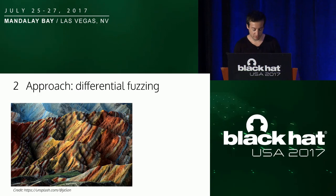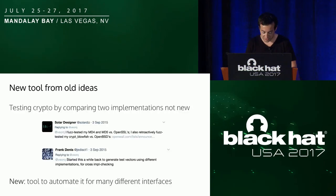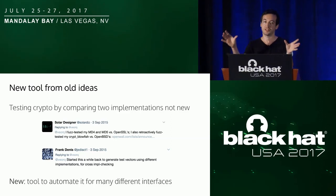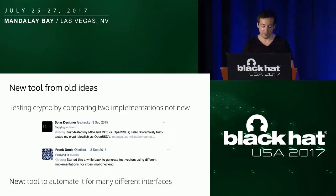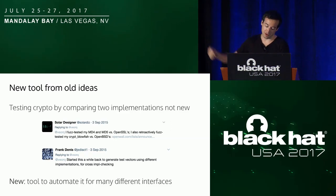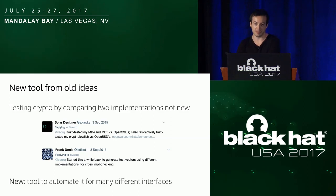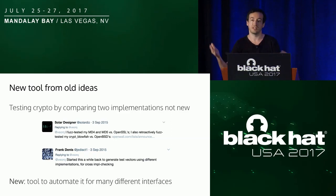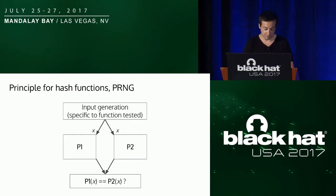So how to do better with a new tool specific to crypto implementations? What we call differential fuzzing is not really new — it's just the idea of comparing two implementations in a kind of automatic way. Several people have done this before. For example, one developer tested a new implementation of MD4 by comparing it to an open source version. Frank from libsodium did something similar. But in those cases, they were only specific to their own software. We want to make something generic that not only we can use, but anyone can use — something agnostic of the language, the API, and the platform.